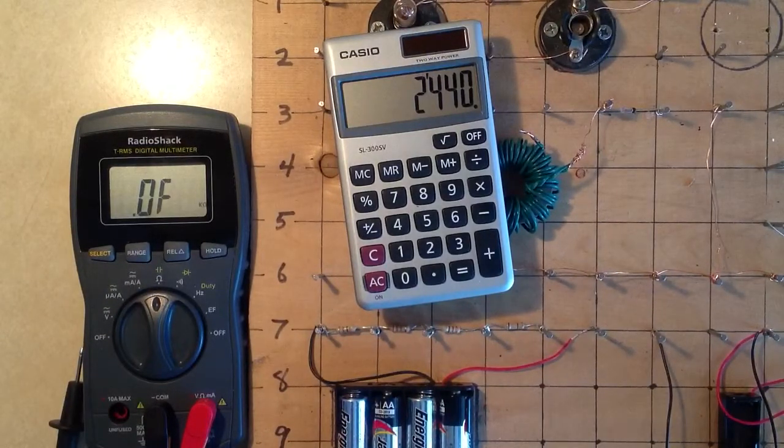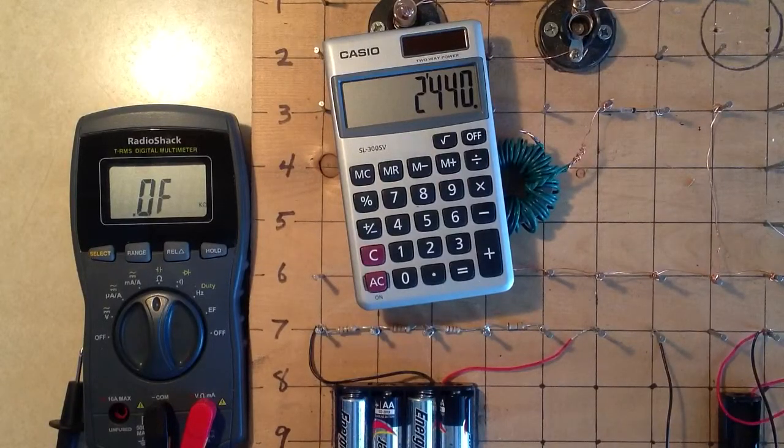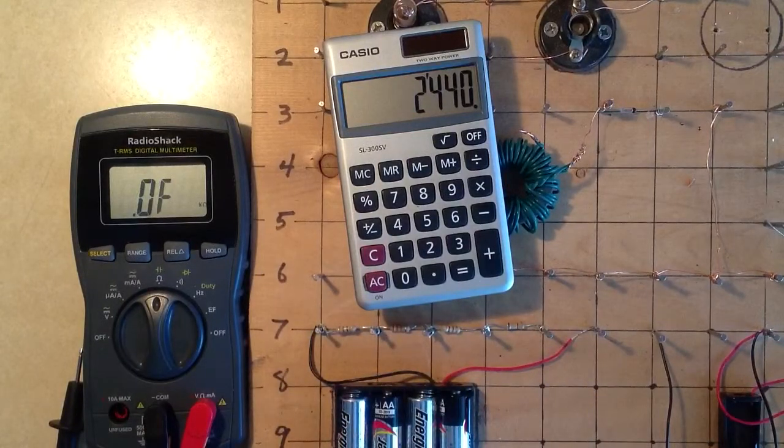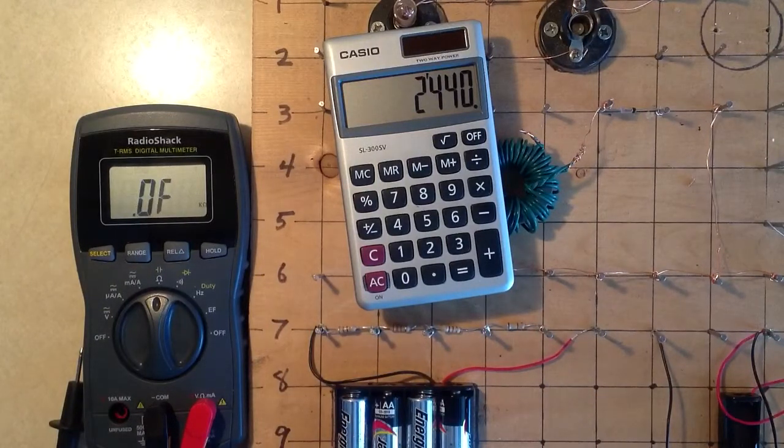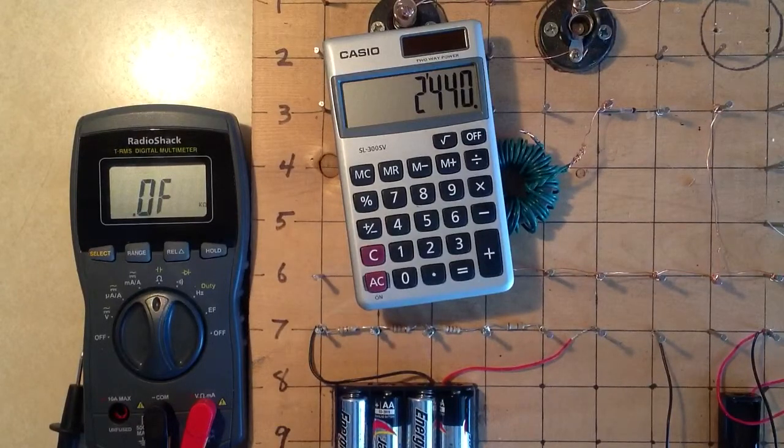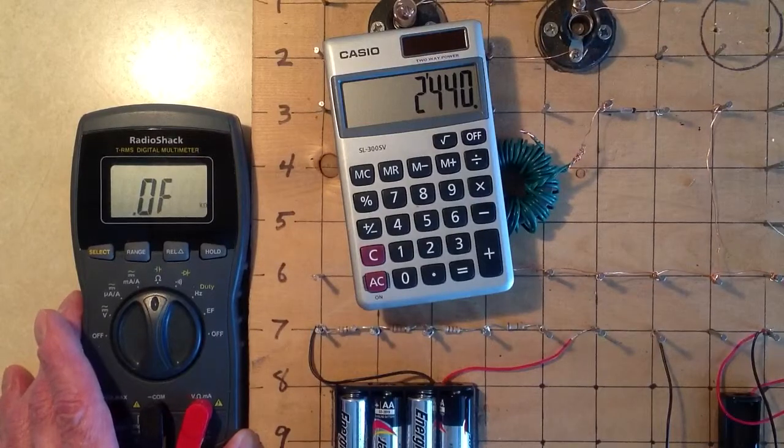Now, the analog ohmmeter that I showed you in the other video didn't even agree with itself. When we added things up, we got something different than the individual components were. That's characteristic, though, because there's interpolation error in any analog meter. And not in a digital meter like this.